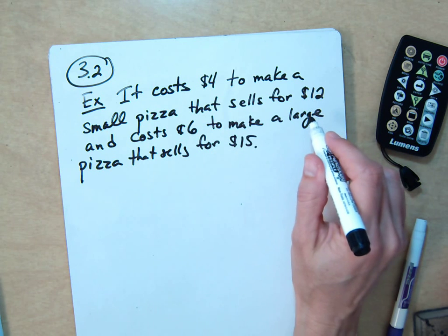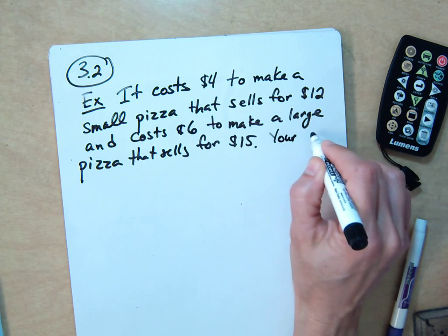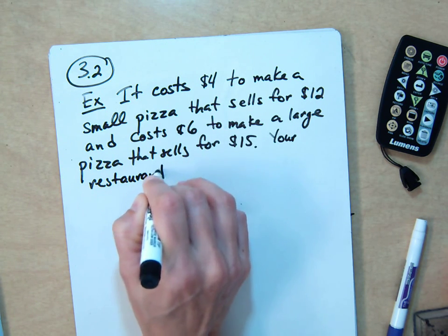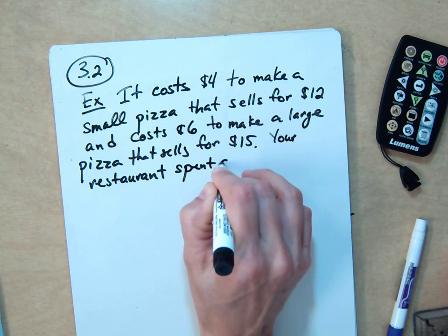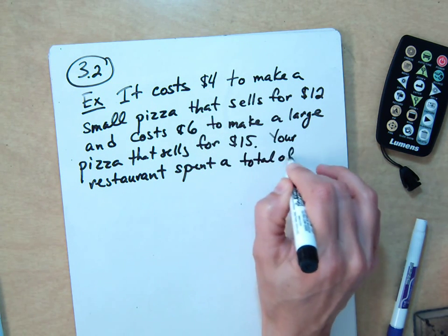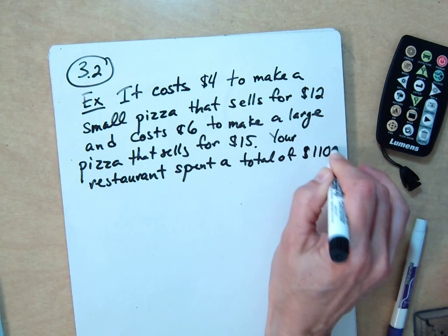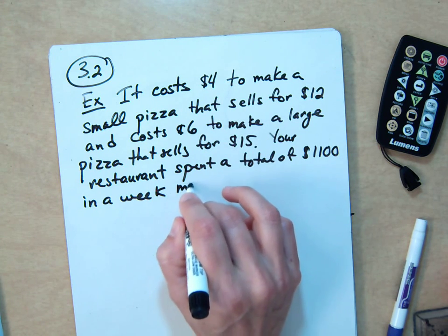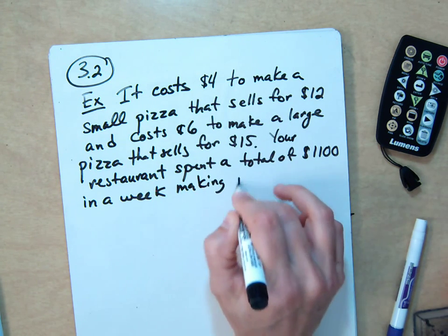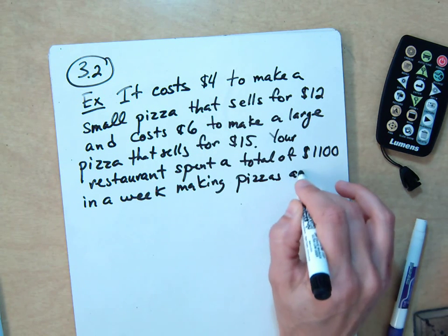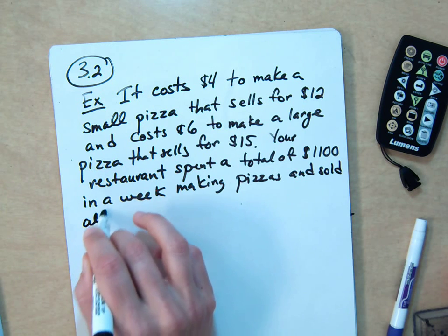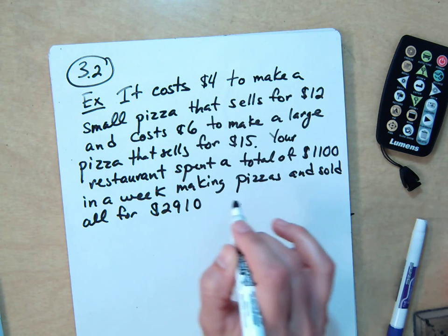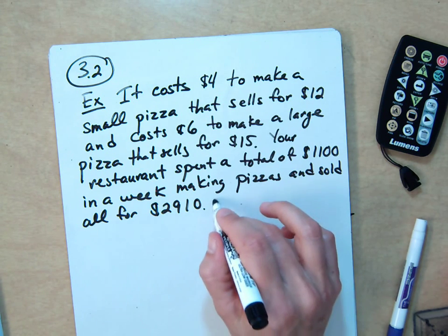Your restaurant spent a total of $1,100 in a week making pizzas and sold all for $2,910. Then, how many small pizzas were sold?